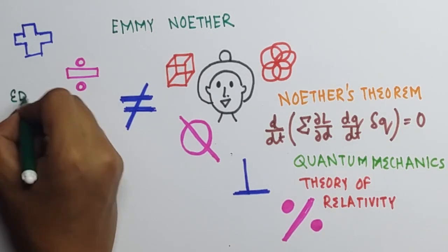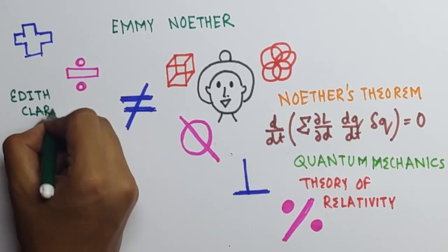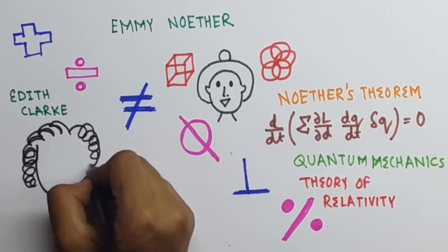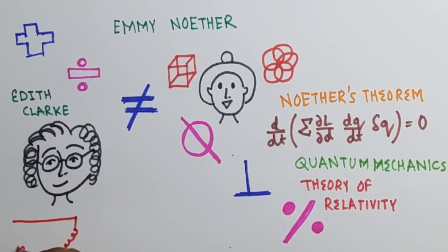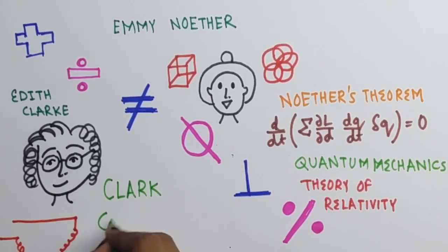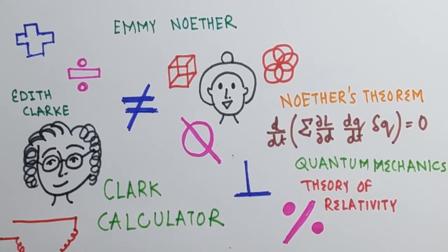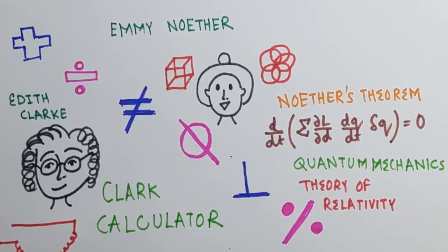Another famous female mathematician is Edith Clarke. Edith Clarke was the first female electrical engineer. She invented the Clarke calculator that used electrical current, voltage and impedance in power transmission lines to solve mathematical equations.